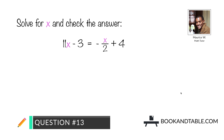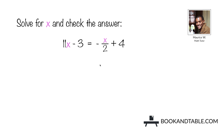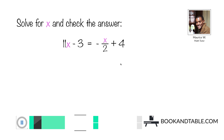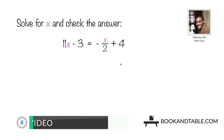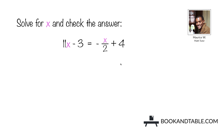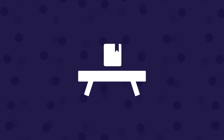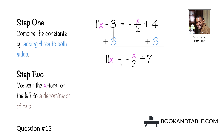Question number thirteen: solve for x and check the answer. 11x minus 3 is equal to negative x over 2 plus 4. Step one: combine the constants by adding 3 to both sides. We negate negative 3, leaving you with 11x on one side and negative x over 2 plus 7 (since 4 plus 3 is 7) on the other side.